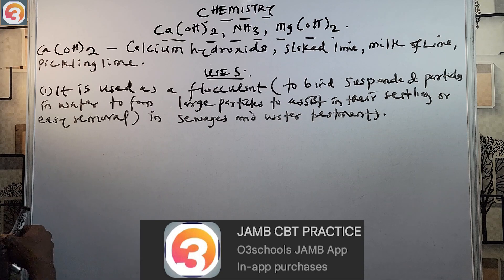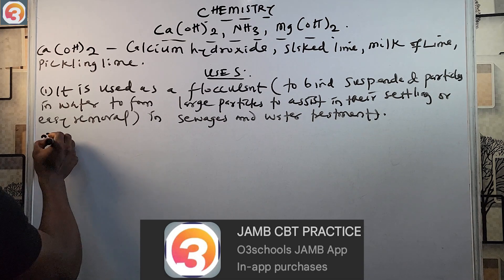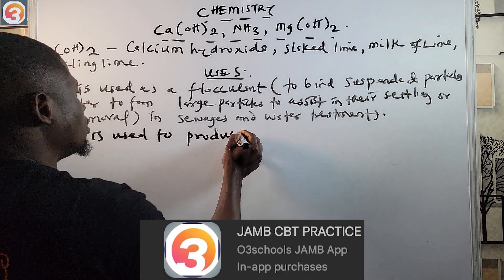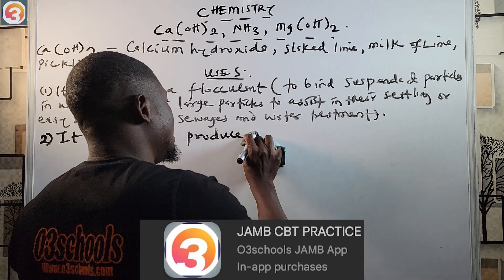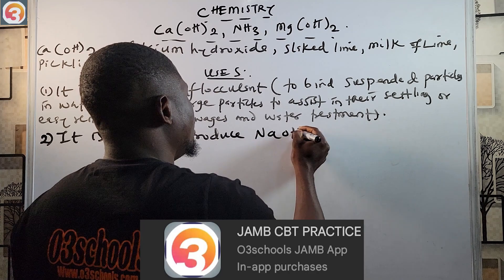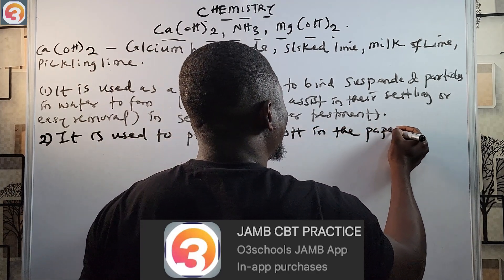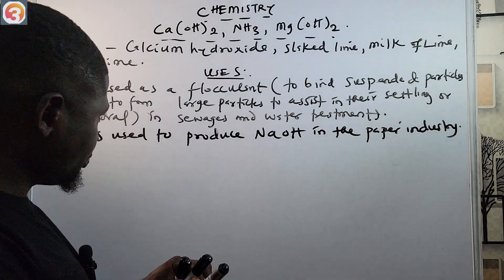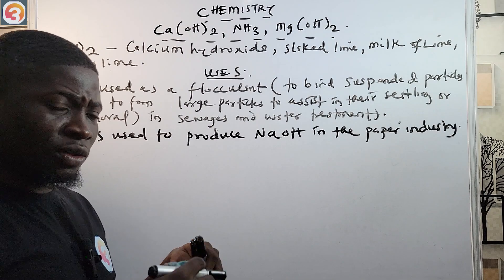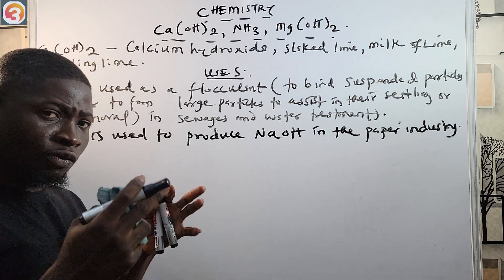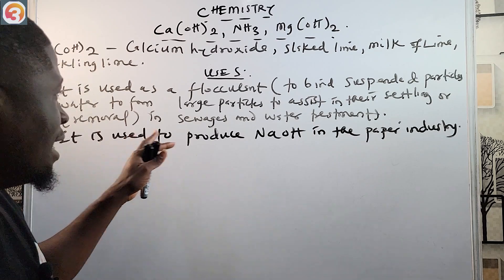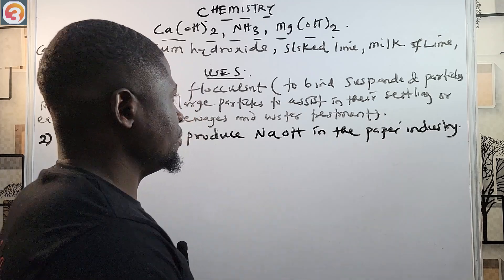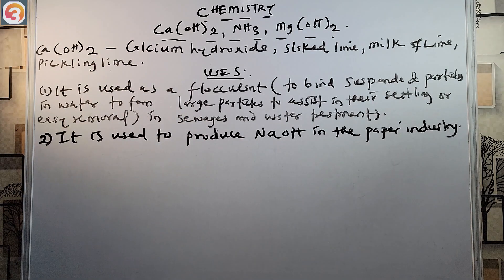Calcium hydroxide is also used to produce sodium hydroxide (NaOH) in the paper industry. It is used for wood pulping in the manufacture of paper. That is one of the applications — used to produce sodium hydroxide in the paper industry.